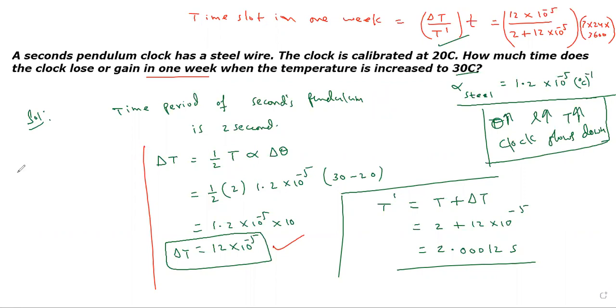Okay, so total time loss in one week, approximately. In the calculation, 12 times 10 power minus 5, 2 plus approximately 2.001. You get approximately 36.28 seconds. Right, just note it also.